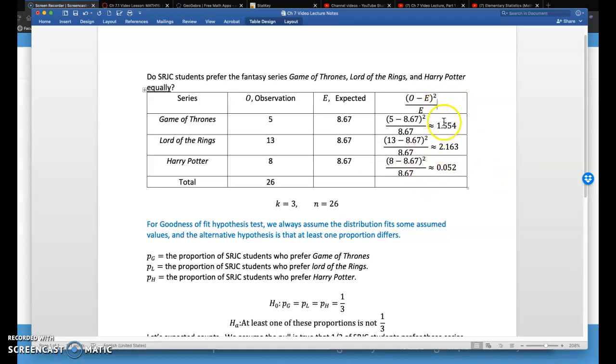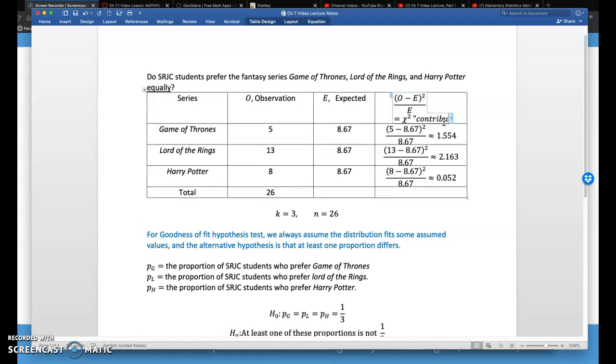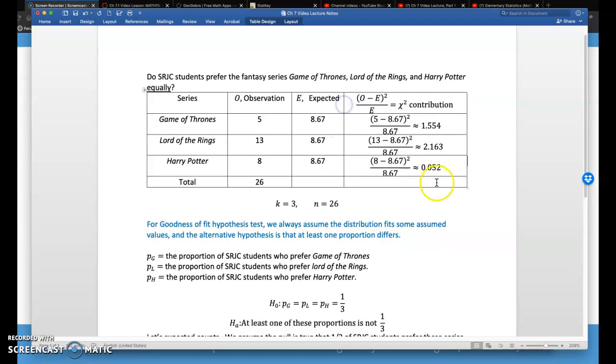So this row right here is called the chi-squared contribution. We have our observed counts and expected counts. The chi-squared contribution is the difference between these two squared, but then we want to take that relative to the expected count. So this is a quick numerical measure to see how far apart the observed is from the expected. Harry Potter was pretty close. Game of Thrones was a little bit more off—should have been 8.67, but it was 5. And Lord of the Rings was the most off, 13, but it should have been closer to 8.67. So that had the largest chi-squared contribution.